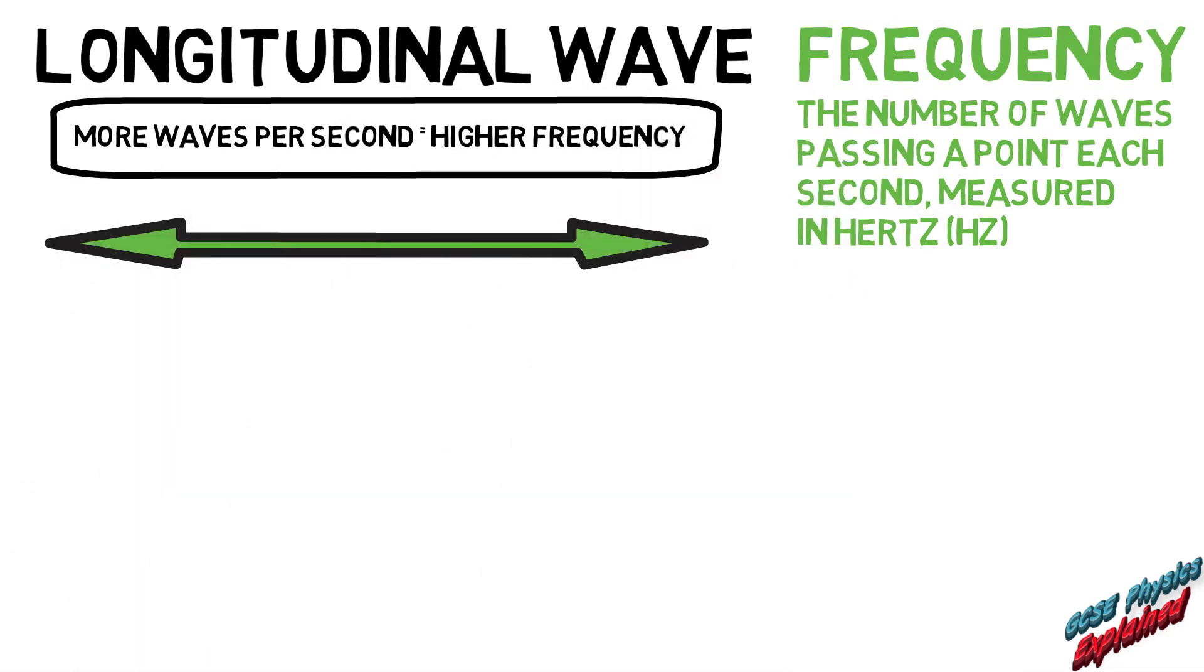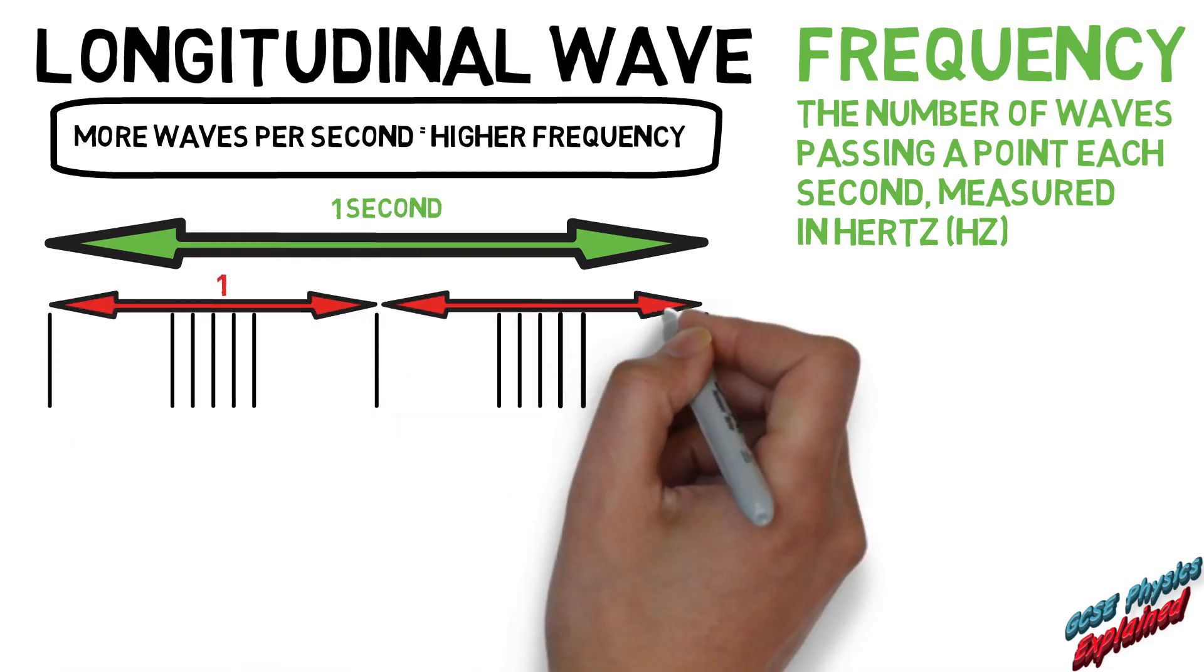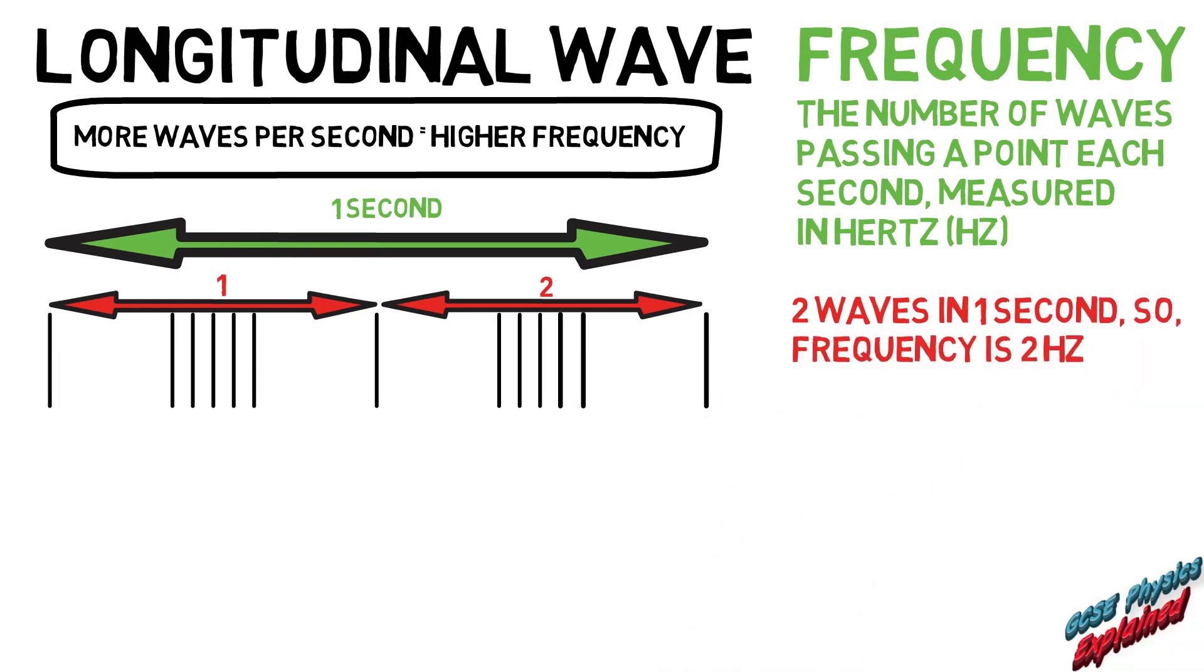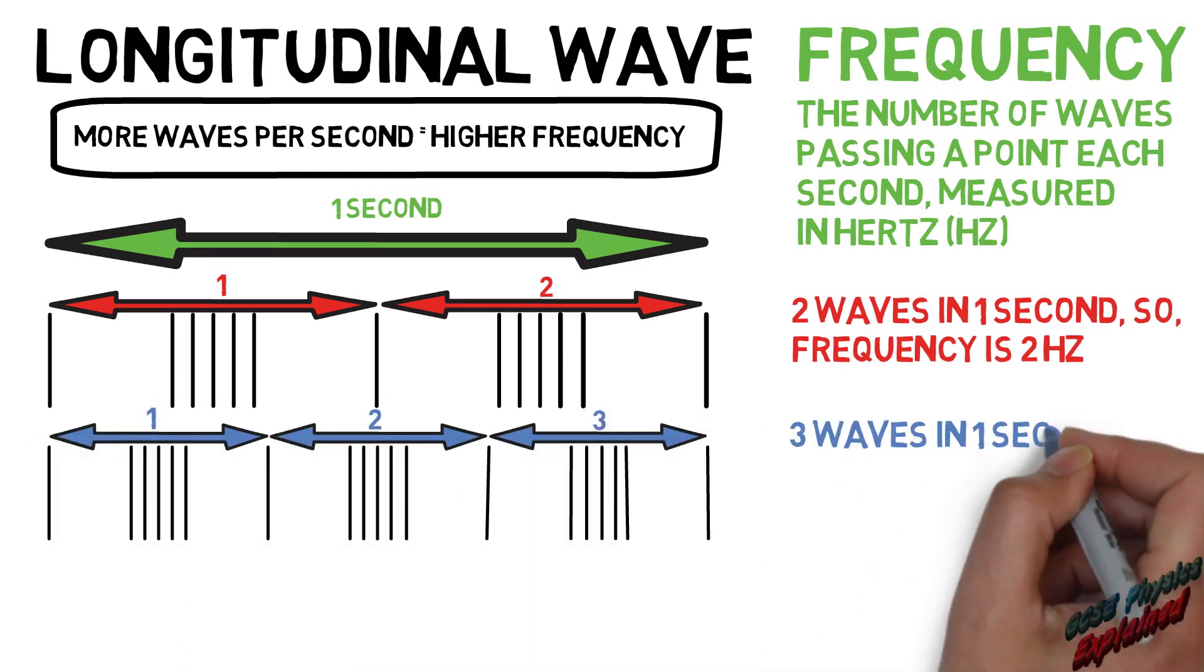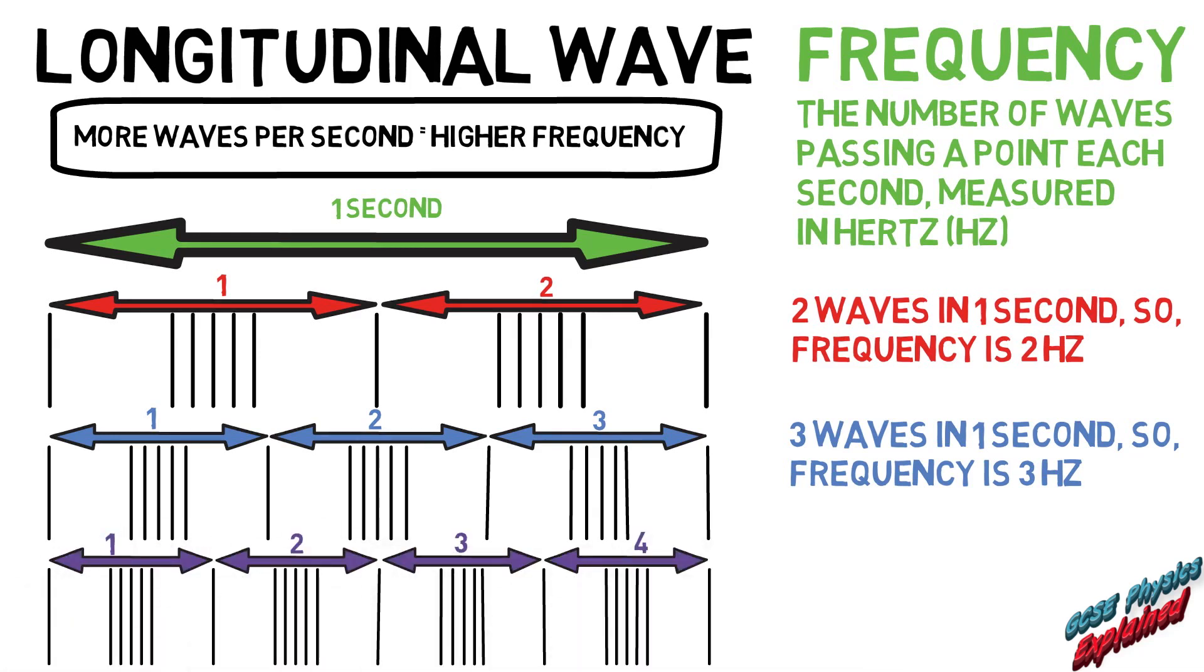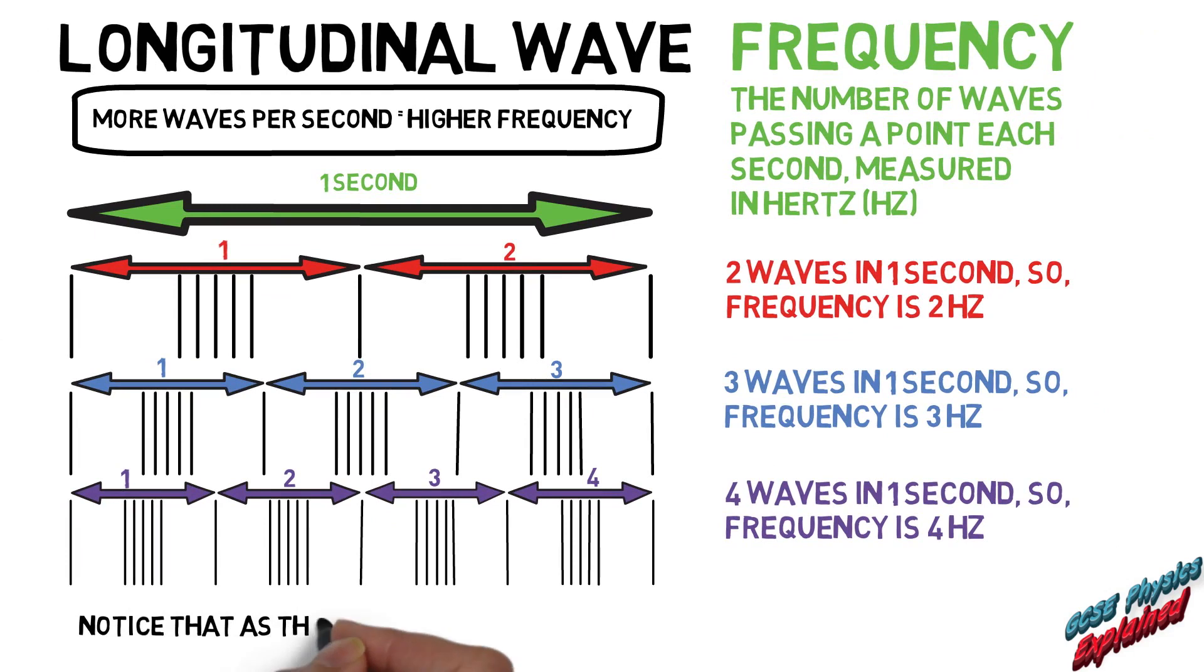Examples: There are two waves in one second, so frequency is two hertz. There are three waves in one second, so frequency is three hertz. There are four waves in one second, so frequency is four hertz. Notice that as the frequency gets bigger, the wavelength gets smaller.